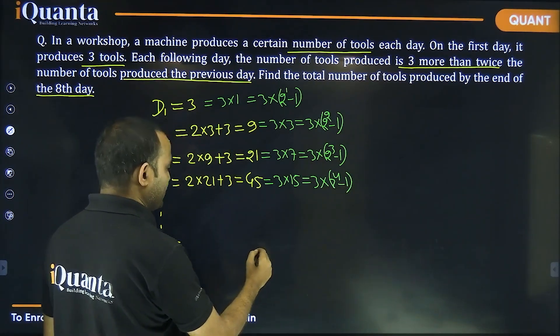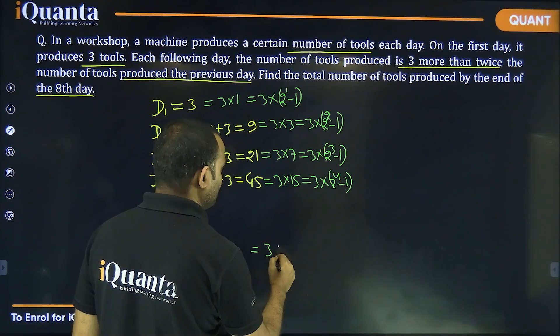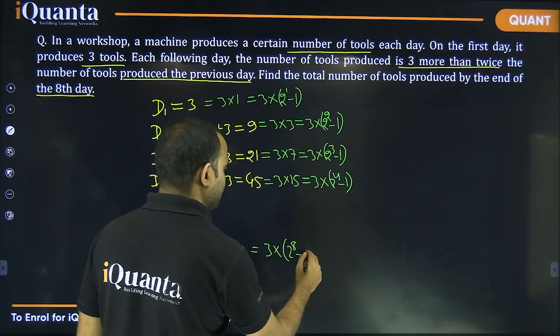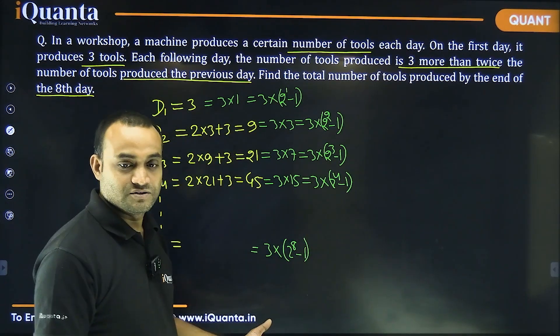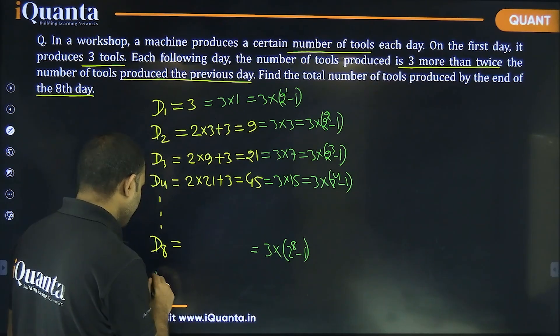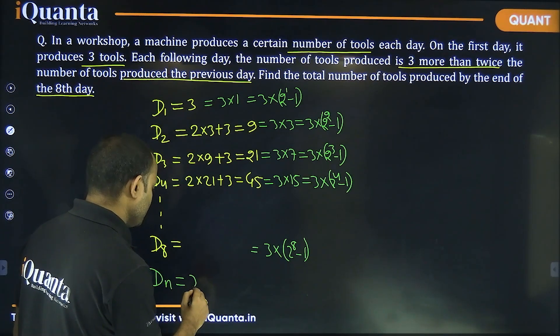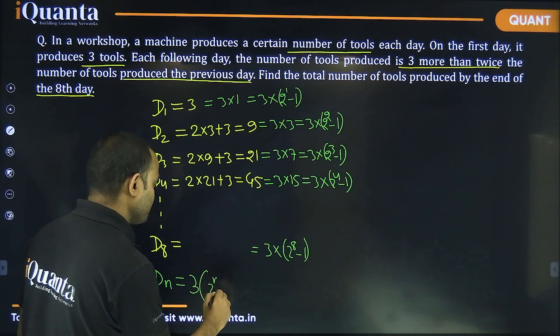Similarly, on eighth day, number of tools produced will be equal to three into two to the power eight. So, we got the pattern. On nth day, if you want to find number of tools produced, it will be 3 into 2 to the power n minus 1.